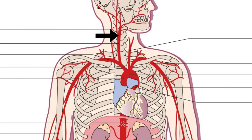On each side, the common carotid artery ascends in the neck, passing behind the sternoclavicular joints to the upper border of the thyroid, where it divides into the external carotid and internal carotid. The internal carotid has no branches and ascends into the skull via the carotid canal. The external carotid has several branches supplying the face and neck.